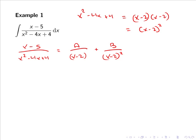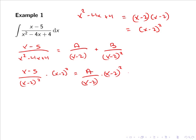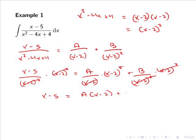Now that we have the partial fraction expansion, we can multiply across by the denominator (x-2)². A lot of the factors cancel out and we are simply left with x-5 = A(x-2) + B. We will use a trick: pick a value of x to eliminate one variable and determine the other.